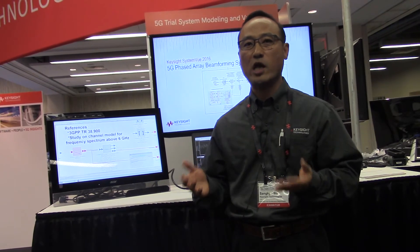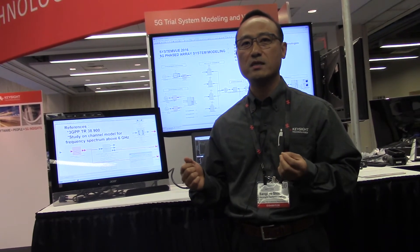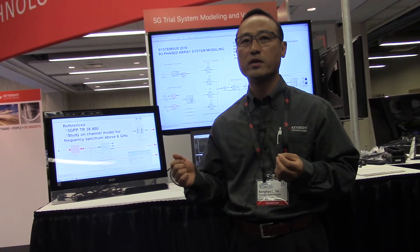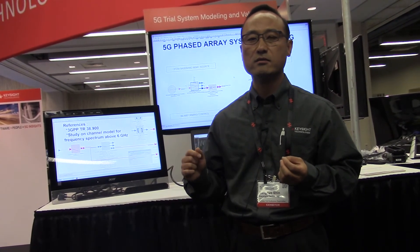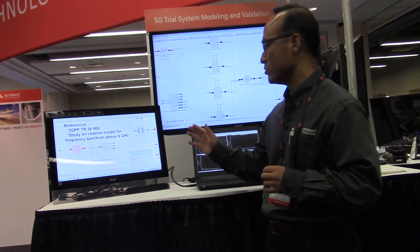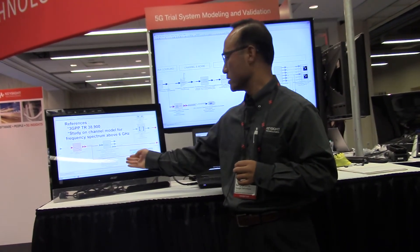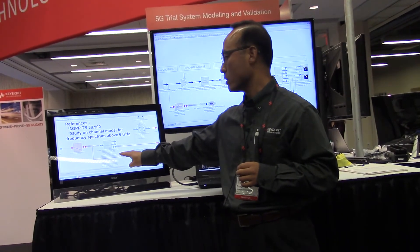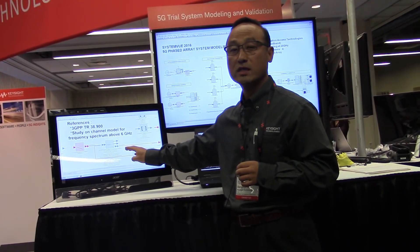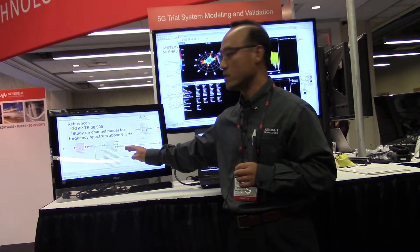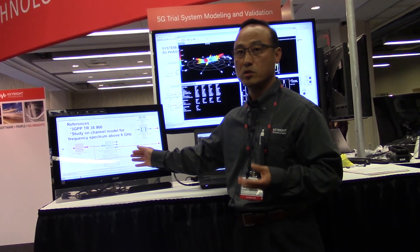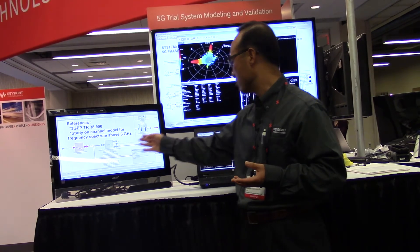To address this type of challenge, 3GPP tried to develop a new channel model supporting between 6 GHz up to 100 GHz. This is the new channel model set up at 28 GHz with an urban micro Street Canyon scenario, where we generate the channel coefficients.